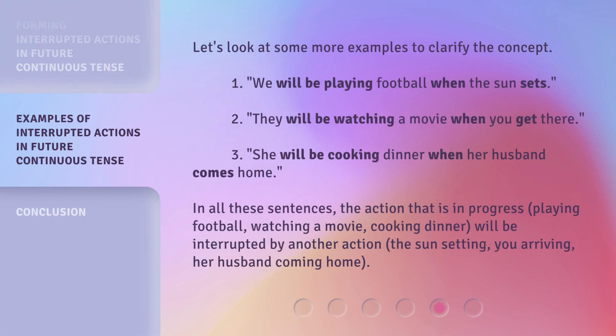Let's look at some more examples to clarify the concept. One: 'We will be playing football when the sun sets.' Two: 'They will be watching a movie when you get there.' Three: 'She will be cooking dinner when her husband comes home.' In all these sentences, the action that is in progress — playing football, watching a movie, cooking dinner — will be interrupted by another action: the sun setting, you arriving, her husband coming home.